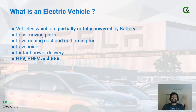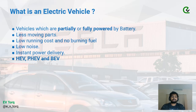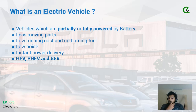Let's start with what is an electric vehicle. Electric vehicles are vehicles which are partially or fully powered by the battery. There are electric vehicles which are partially powered by the battery — you might have heard of hybrid cars. Most hybrid cars in the market are partially powered by battery: they will run on fuel, but there will also be an induction motor and a battery attached to the car, giving you instant torque. We have different classifications for electric cars, which we'll move into shortly.